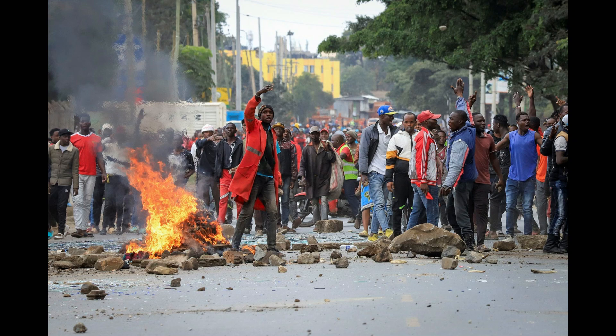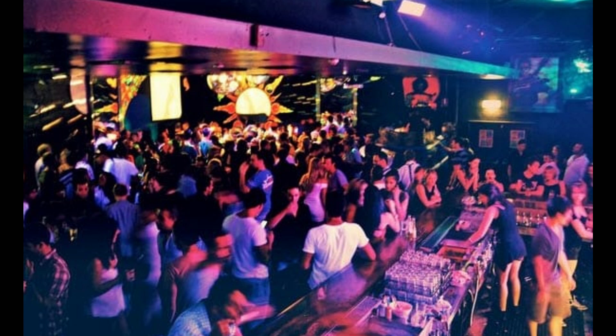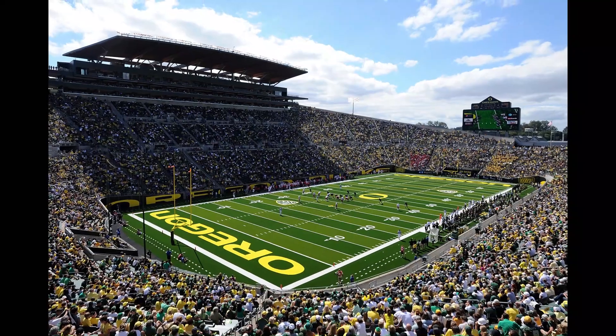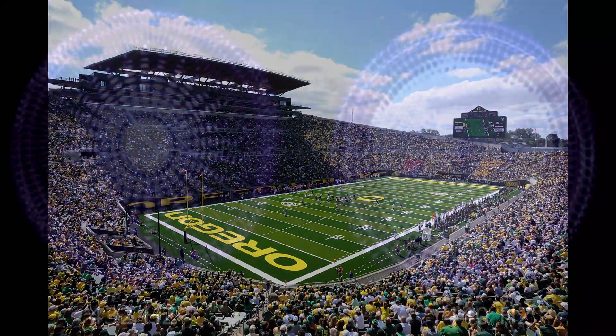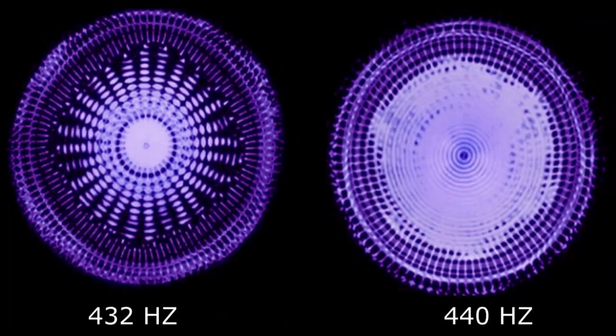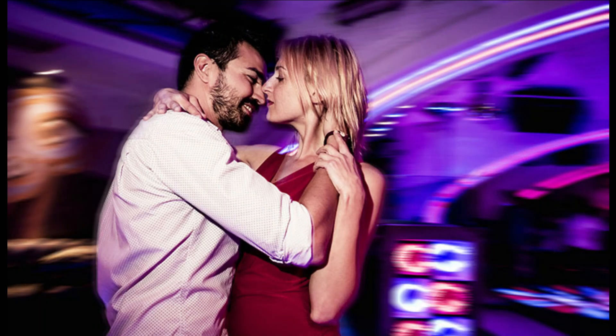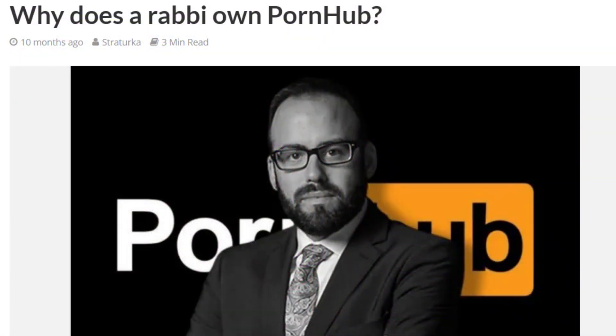Number three, facilitating transmission. Social amplification — the parasite could enhance the host's sociability, making them more likely to engage in activities where they come into close contact with others, such as gatherings or public events. Altering communication — it could modify the host's speech patterns, making them more persuasive or charismatic, leading others to trust and follow them, further aiding in the parasite's spread. Spreading through bodily fluids — the parasite could ensure its transmission through bodily fluids such as saliva, sweat, or blood, making casual or intimate contact a vector for infection.